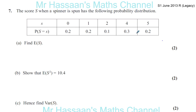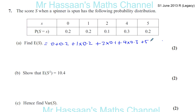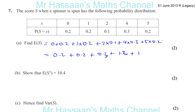These are the probabilities; they all add up to 1. You basically multiply these numbers together. So you have 0, plus 0.2, plus 1 times 0.2, plus 2 times 0.1, plus 4 times 0.3, plus 5 times 0.2. That's 0.2 plus 0.2 plus 0.2 plus 1.2 plus 1, giving 0.6 plus 1.8 plus... so the expected value of S is equal to 2.8.